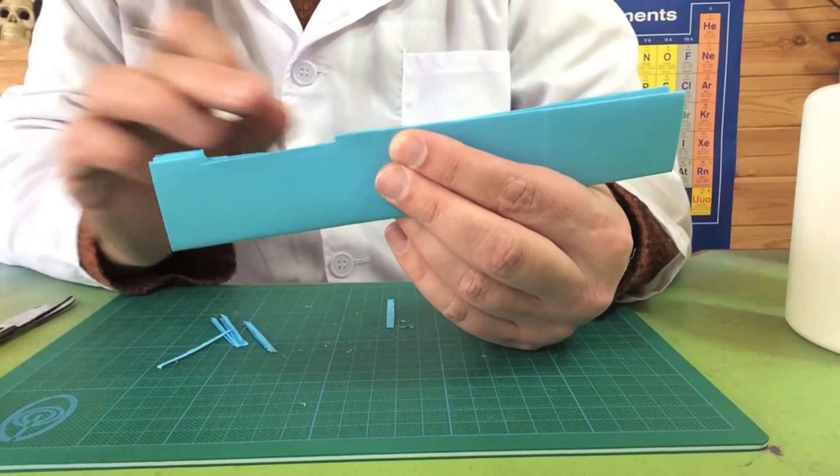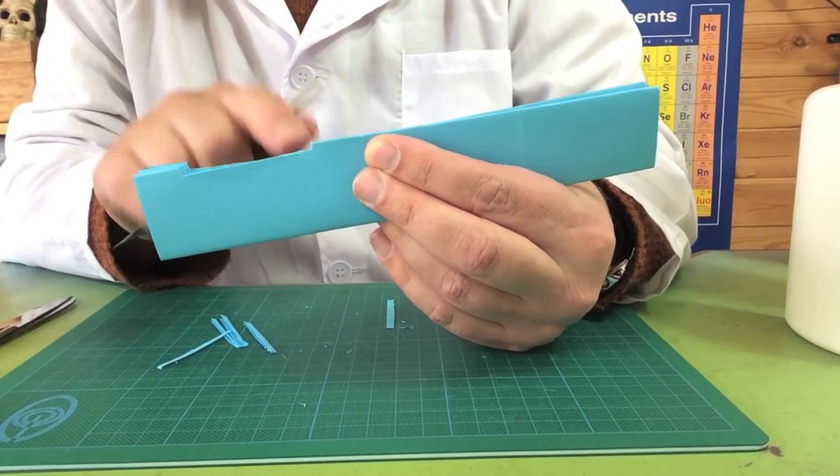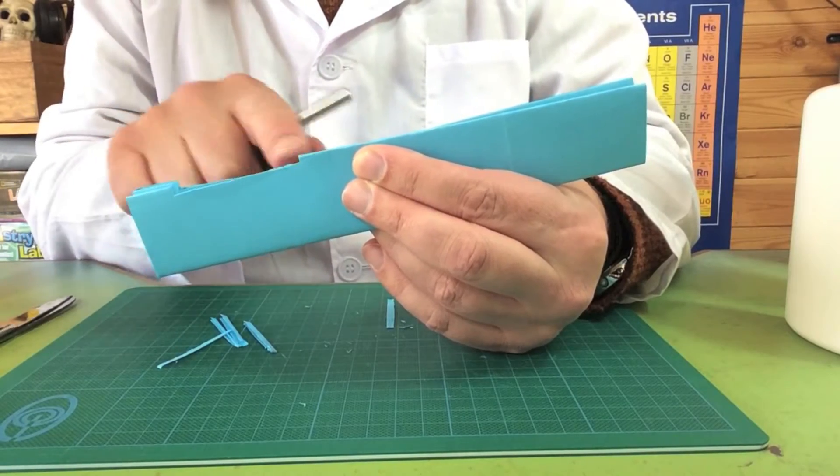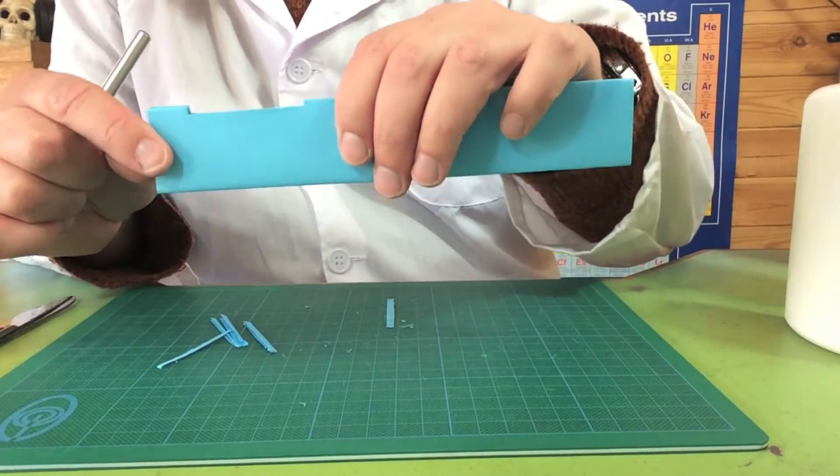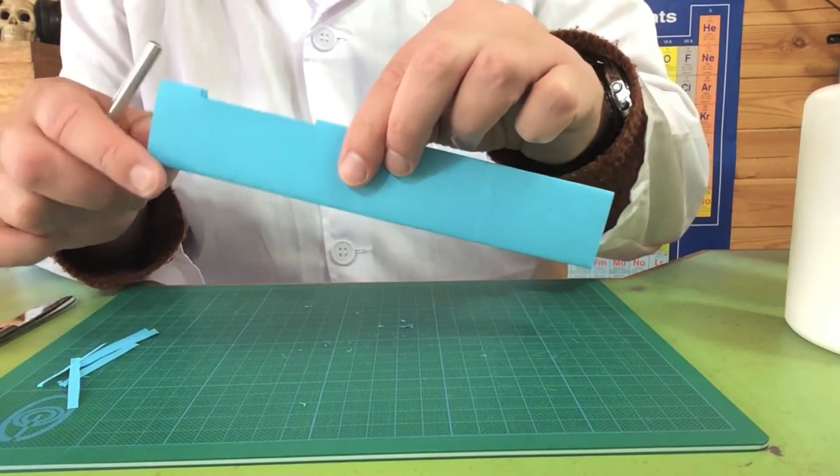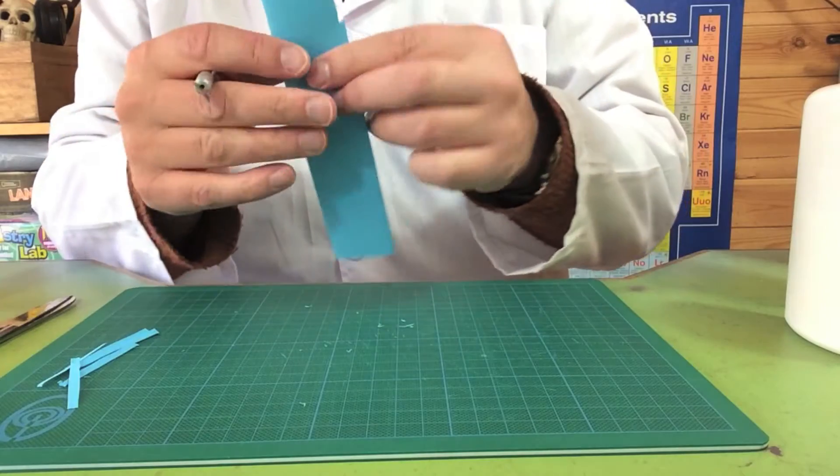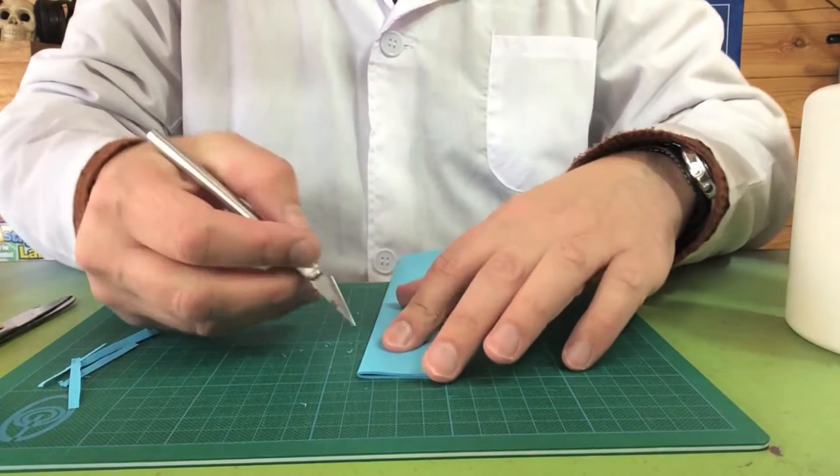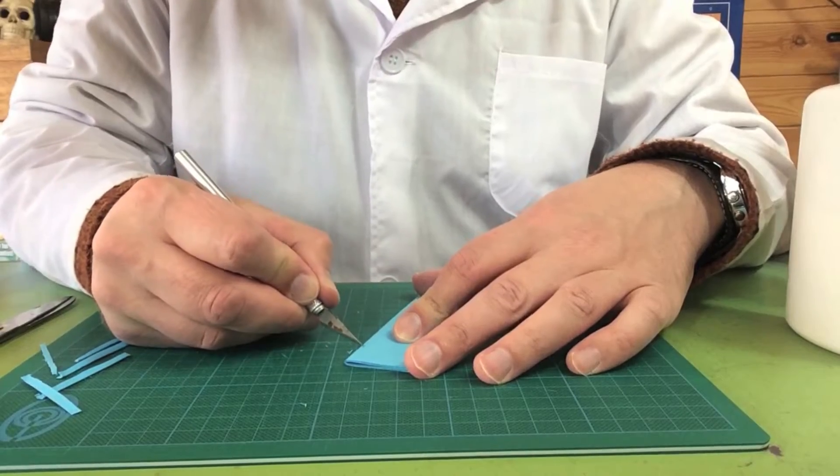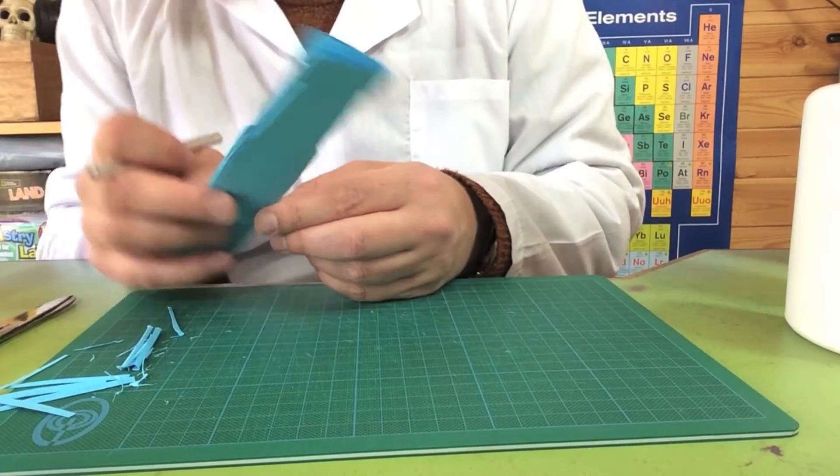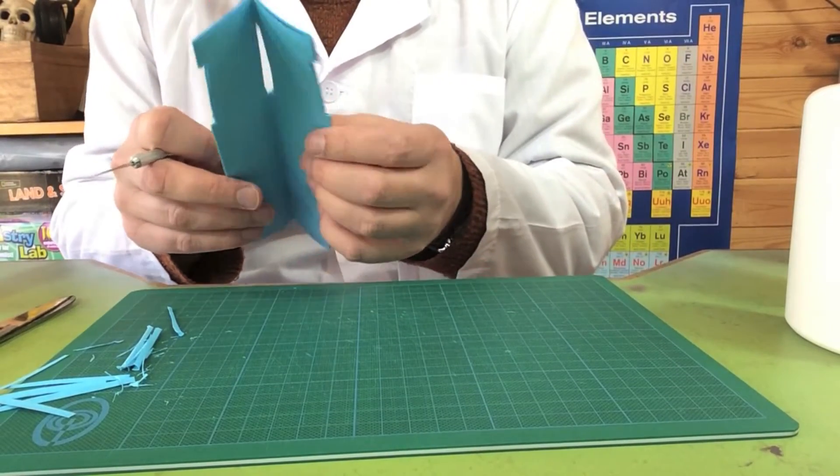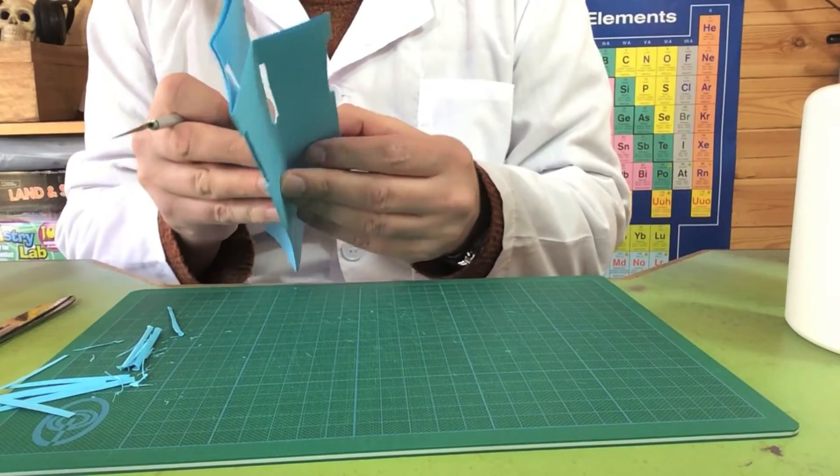And I've now cut a section out of the side of the card. And I'm going to do the exact same thing on the other side too, just at the same height. And there we have our card with two slots in it. But look what happens when we open it up.